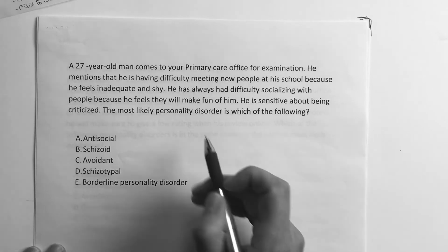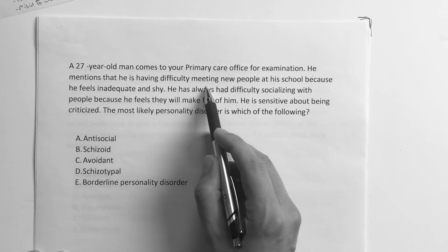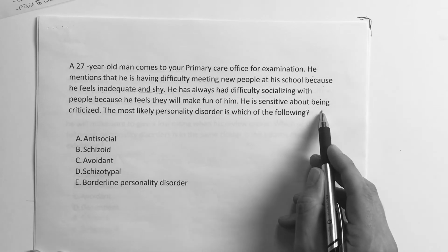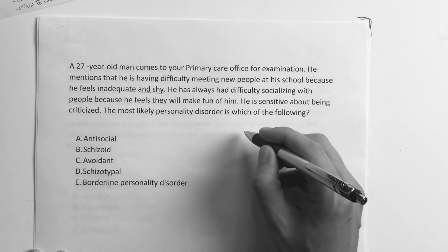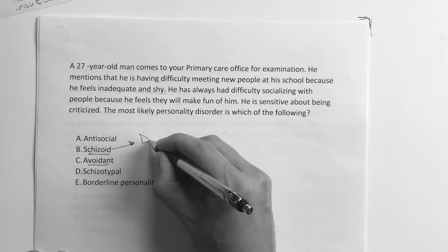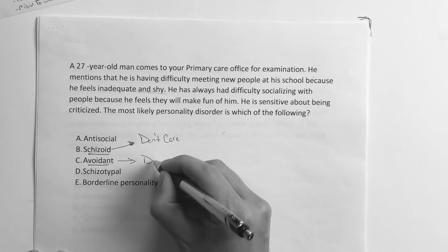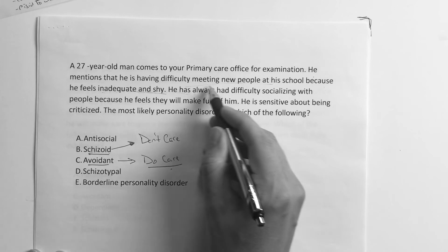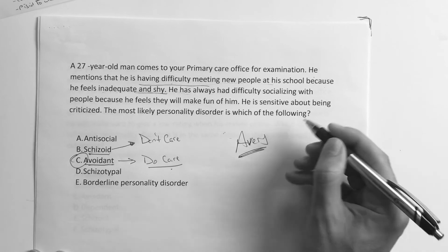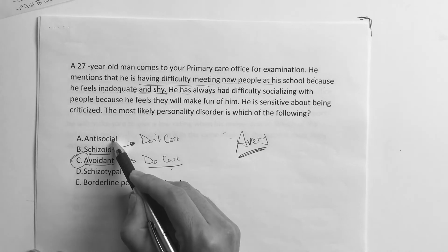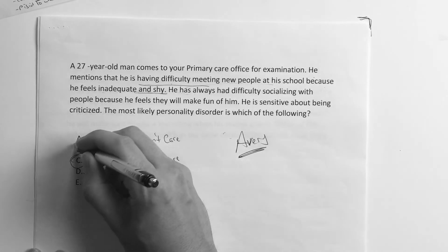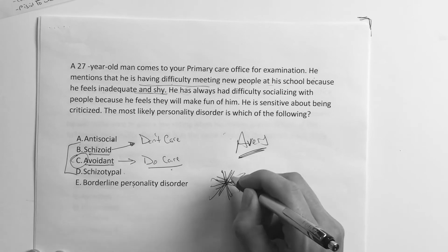Next question: A 27-year-old man comes to your primary care office for examination. He mentions he's having difficulty meeting new people at school because he feels inadequate and shy. He's always had difficulty socializing because he feels people will make fun of him and he's sensitive about being criticized. You have to differentiate between avoidant and schizoid. Schizoids avoid and don't care. Avoidants do care — this guy is trying but feels overly shy and fears rejection. Think of avoidant as 'Avery' — he wants to be social but just doesn't have the skills. That's avoidant personality disorder, which is cluster C. Schizotypal is cluster A.